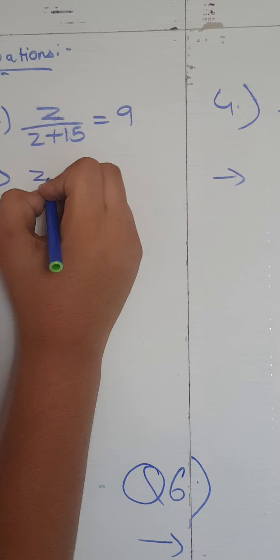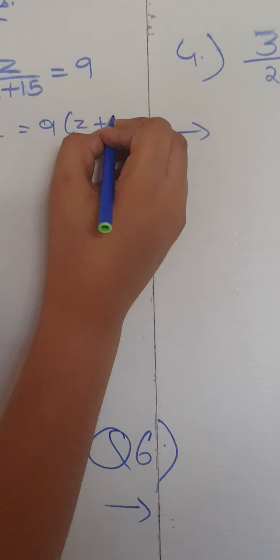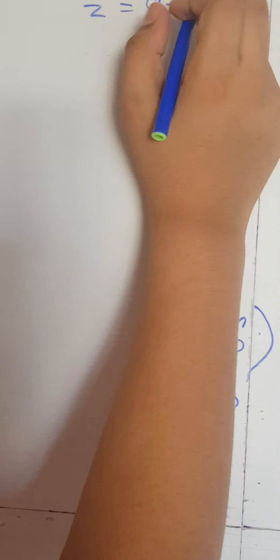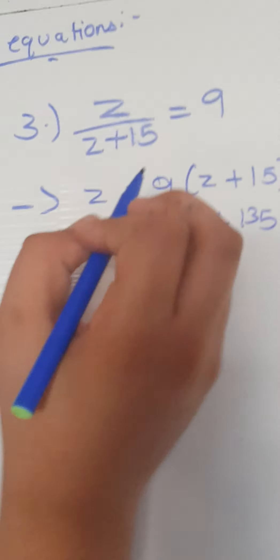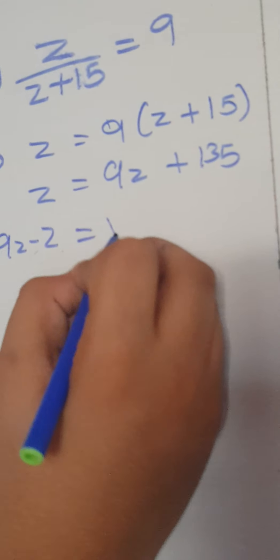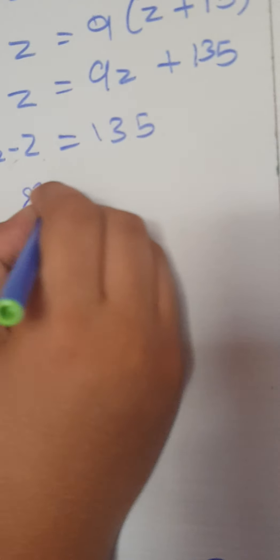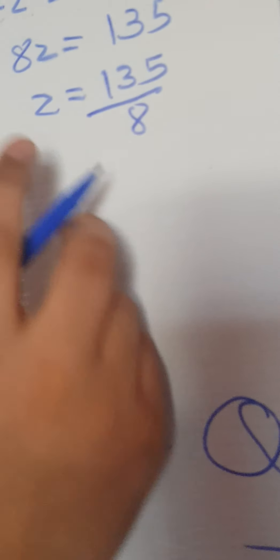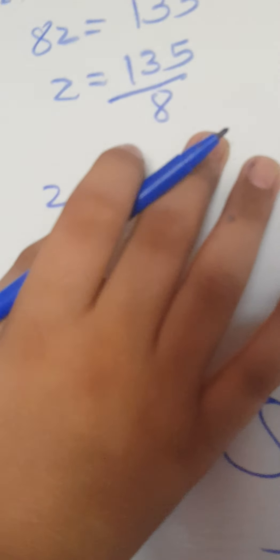Now let us do question number 3. Here we have an equation in z. We will do cross multiplication. So 9 is multiplied by this. z is equal to 9 plus 15 which, when we open the brackets, will be 9z. Now 9 multiplied by z is 9z, and here it will be 135. Now we will transpose: 9z subtracted by z is equal to 135. Here we will get 8z which is equal to 135. So z is equal to 135 upon 8. You need to divide them and tell me the right answer in the comment section.